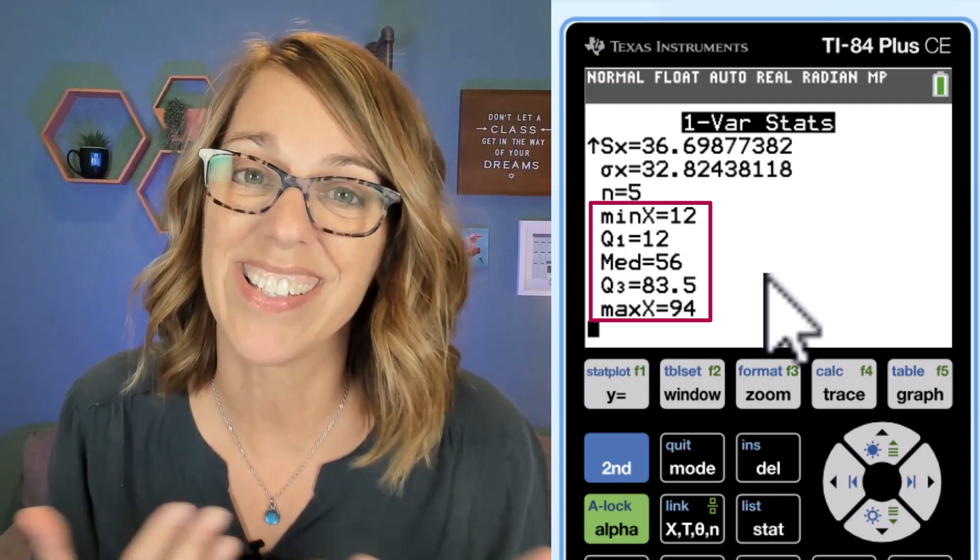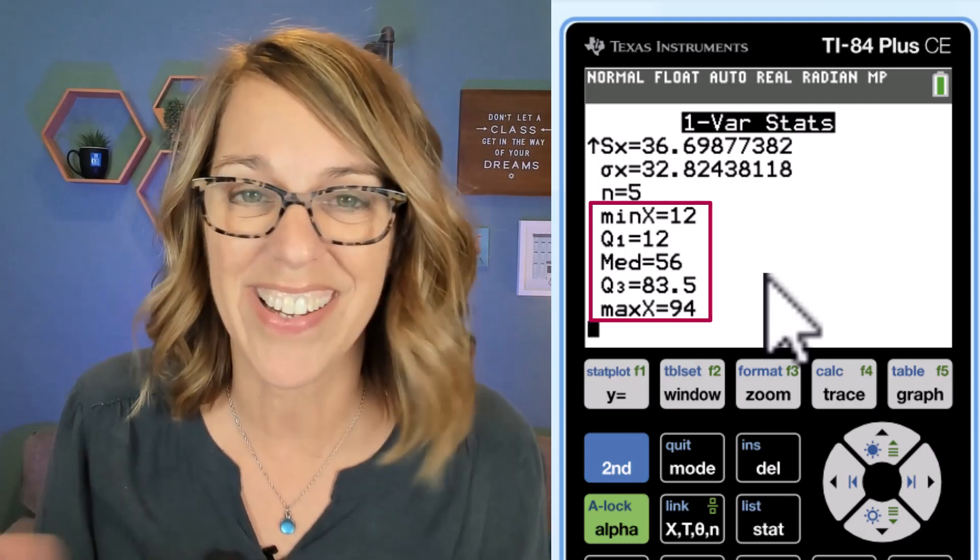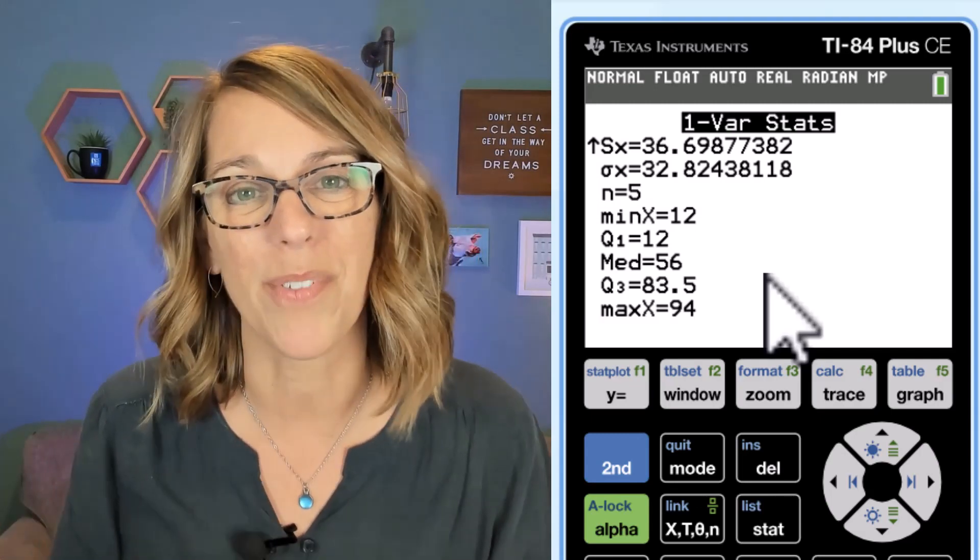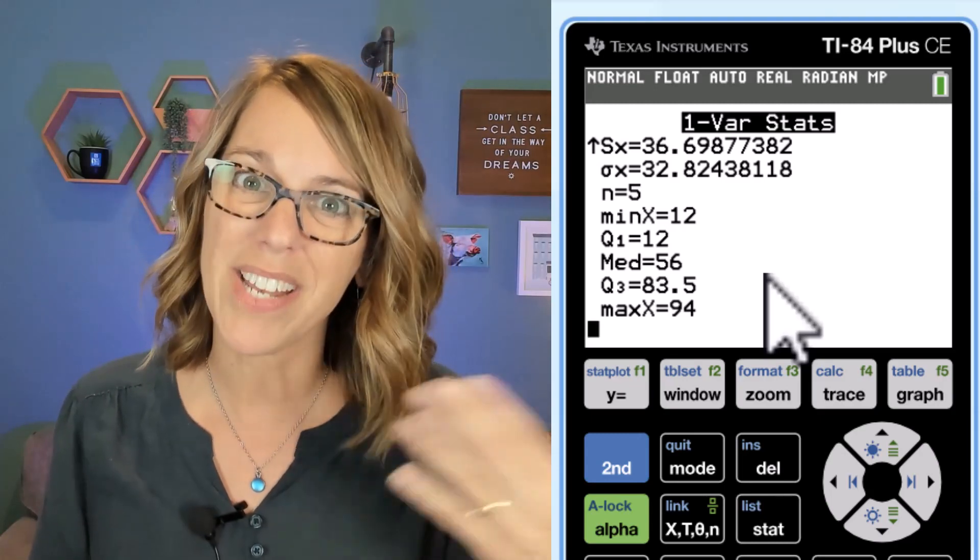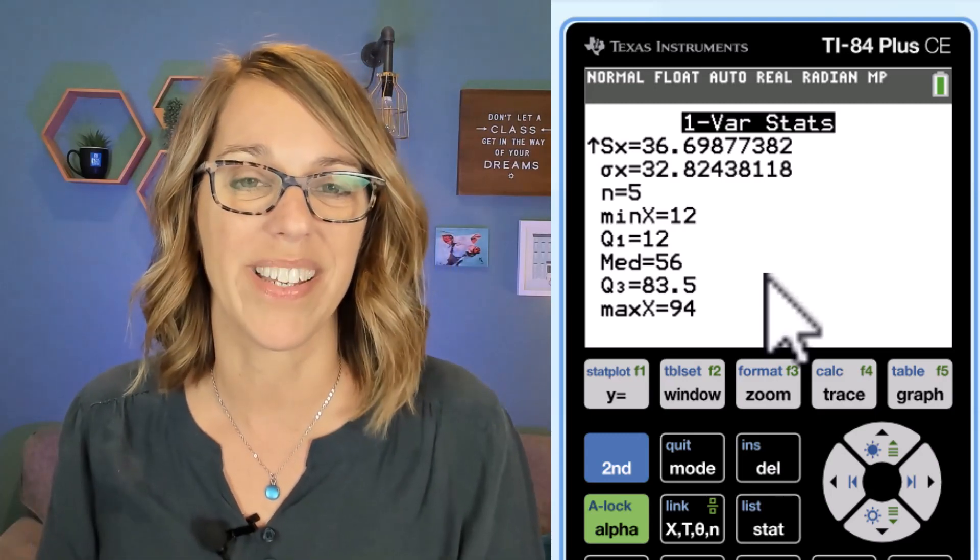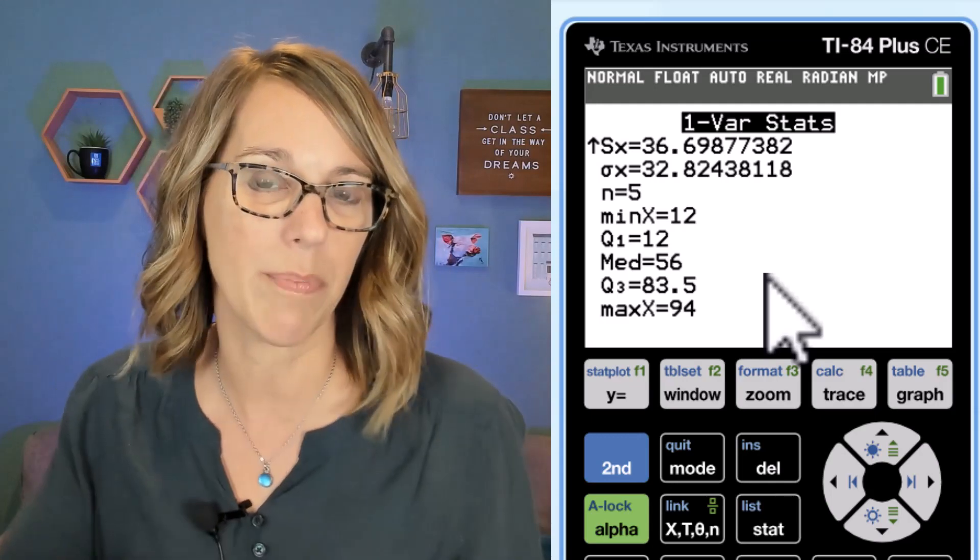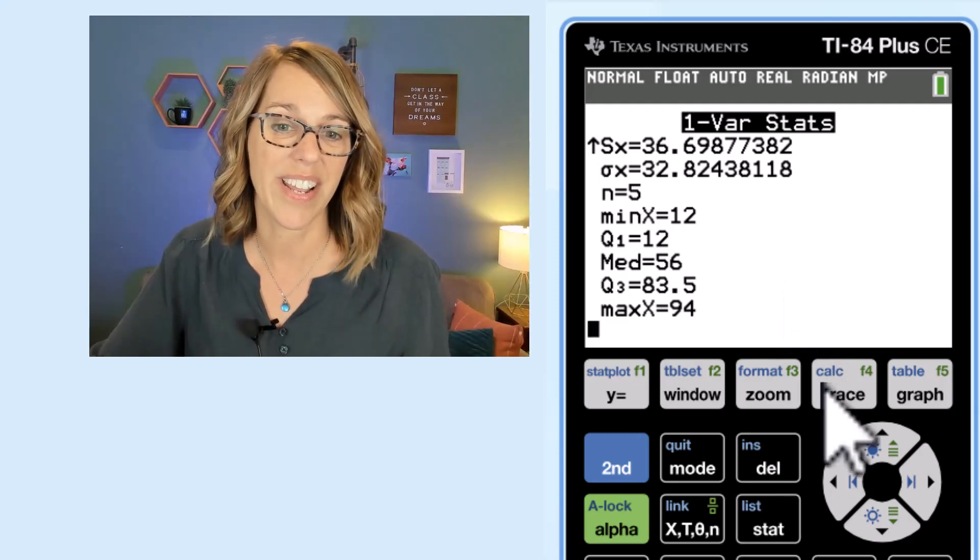But what isn't there is our mode. I don't know why the calculator doesn't compute the mode for us, so instead we're going to put our data in order so we can manually figure out what the mode is. Now our list is pretty easy but your list might be a little bit larger. Let's sort our data.